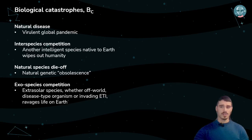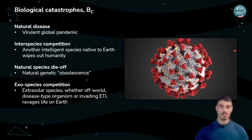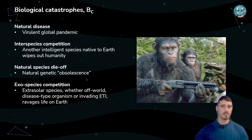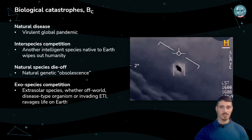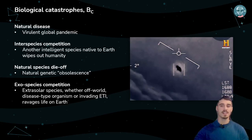Next on our list are the biological catastrophes. We have natural disease — I believe we should all be familiar with the virus shown above. Interspecies competition — could apes someday take over the world? Natural species die-off — species constantly evolving, and those who fail to adapt will die off. And last, exospecies competition — whether sentient beings or just viruses from deep space, they could lead to human demise. The picture above was taken during a US Navy training mission and the Pentagon still fails to explain the origin of the seen object.